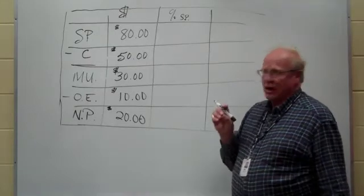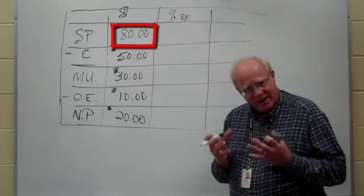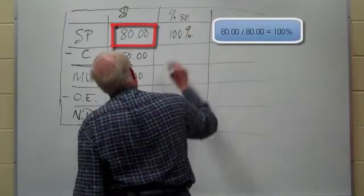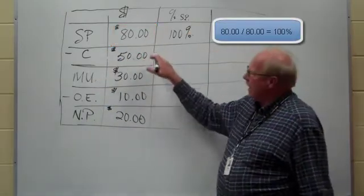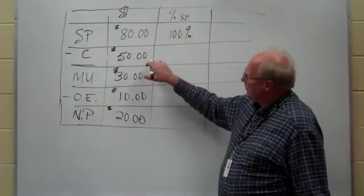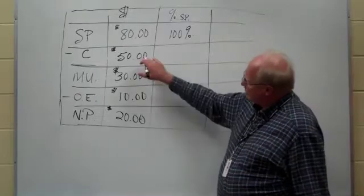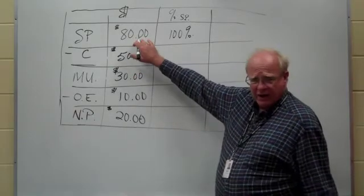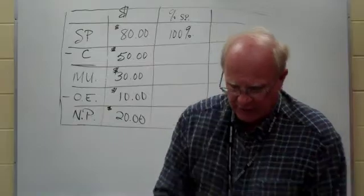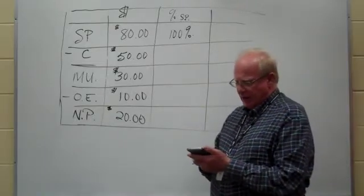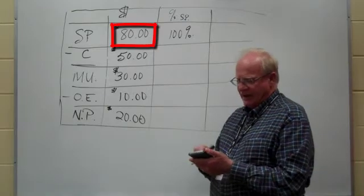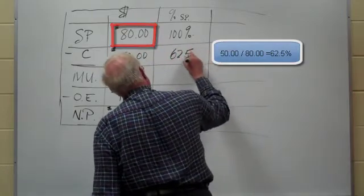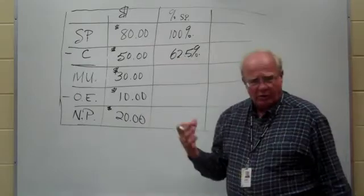They want everything compared to the price they sell something at. So if we base everything on selling price, the selling price of course becomes the base and it is 100%. So this is 100%. And everything else now will be compared to that base which is 100%. So if we want to know what percent the cost is of the selling price, we will just compare 50 to 80.